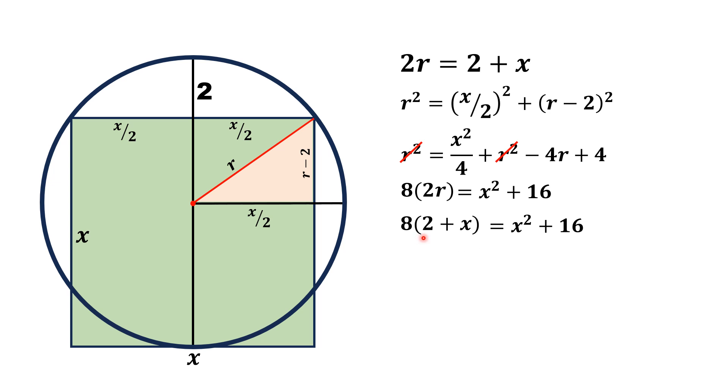The left side will become 16 + 8x. From here 16 will be cancelled out with 16, and we will have x² - 8x = 0. From here, if we take x common, we will get x(x - 8) = 0, and from here we will get x = 0 or x = 8.